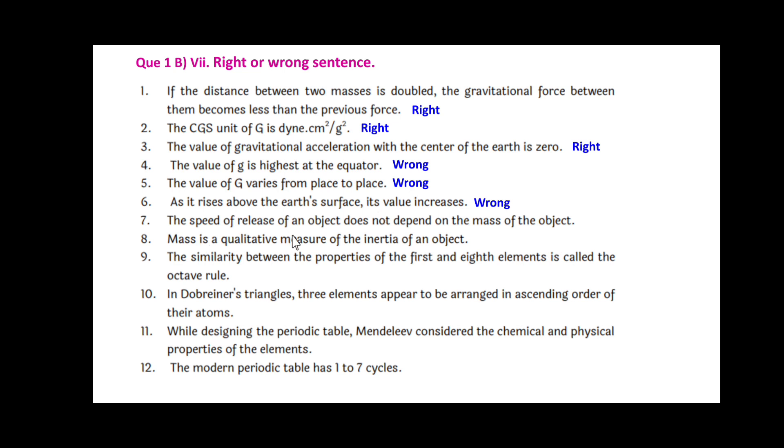The speed of release of an object does not depend on the mass of the object. This is right. Mass is a qualitative measure of the inertia of an object. It is wrong.